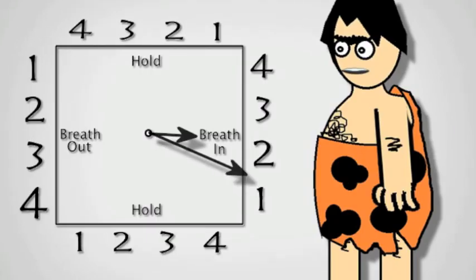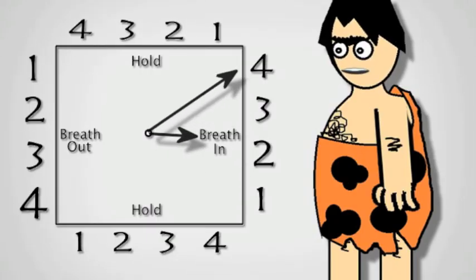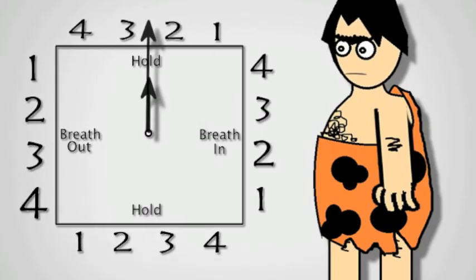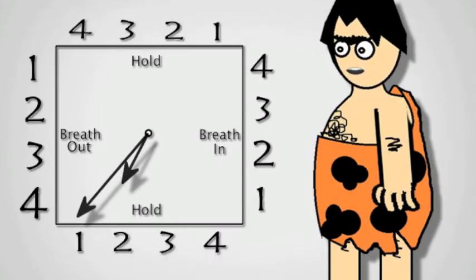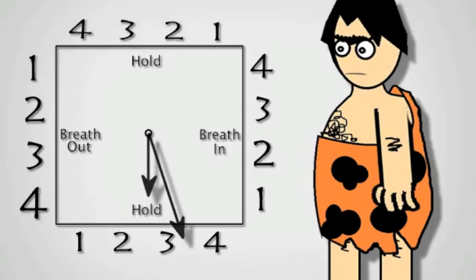First we'll try square breathing. Watch the caveman breathe in, hold, breathe out, and hold, counting to four each time. Let's practice with him, and use your finger to draw the square as you breathe. Ready?